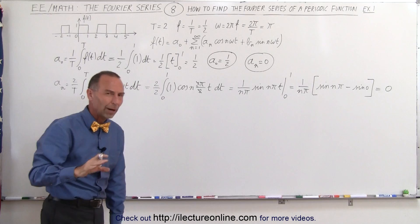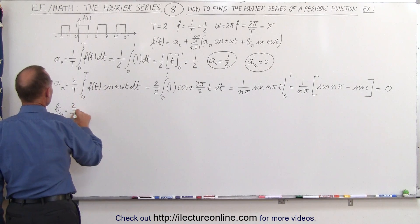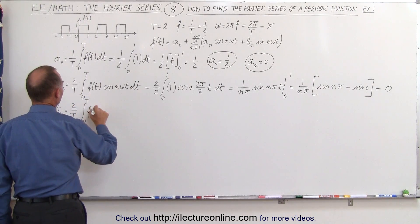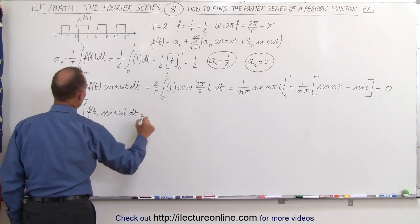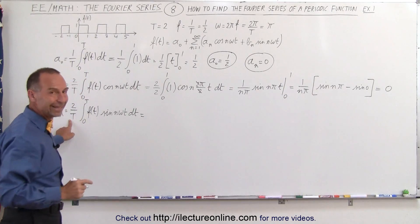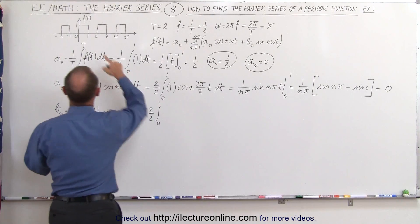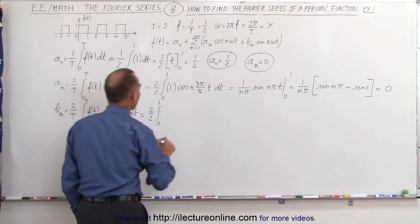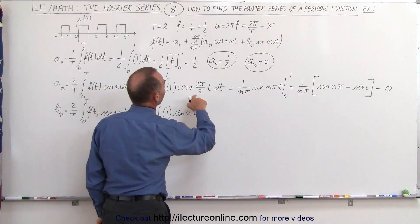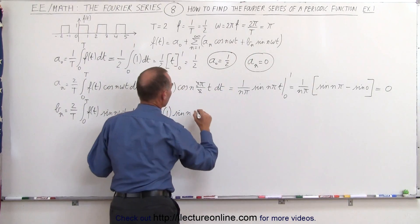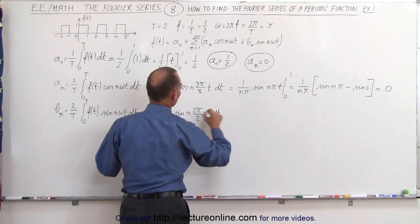Now let's find the b sub n's, which will probably not equal 0. b sub n is equal to 2 over T times the integral from 0 to T of f(t) times the sine of n·ω·t dt. Since T is 2, this becomes 2 over 2 times the integral from 0 to 1 of 1 times the sine of n·(2π/2)·t dt, and again the 2's cancel out.